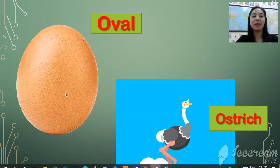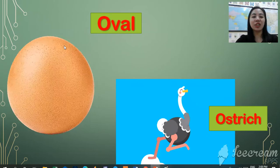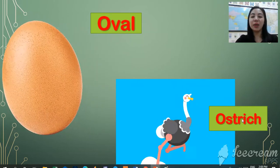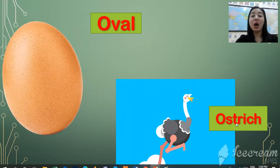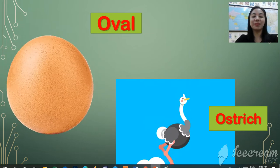And we also have ovum, ovum. The shape is ovum. We also have ostrich, ostrich, ostrich.